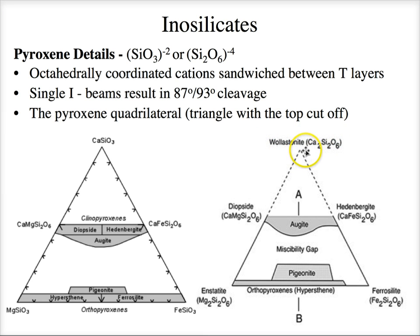The most common pyroxene is augite. If you have some magnesium, some iron, and some calcium together, you end up with augite in that part of the quadrilateral. Another mineral with a funny name is pigeonite — a very high-temperature version found in volcanic rocks. Just like alkali feldspars and plagioclase feldspars can exist together at high temperature and then exsolve on cooling, we can also see exsolution in pyroxenes.